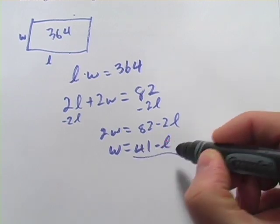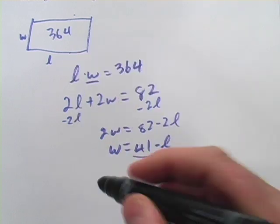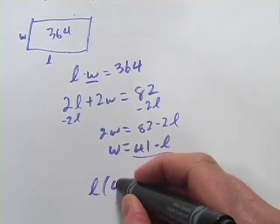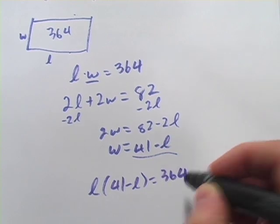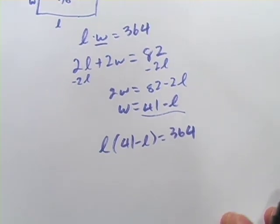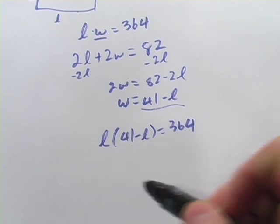Now this is what I'm going to put in place of W up here. So that area equation becomes L times 41 minus L equals 364. And that is a quadratic that we will solve to get our answers. So let's go ahead and do that.